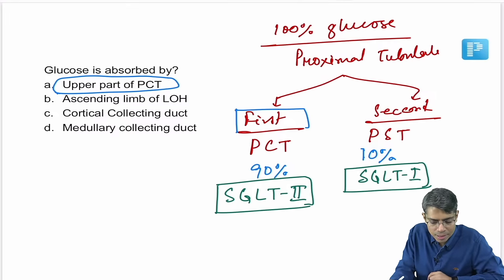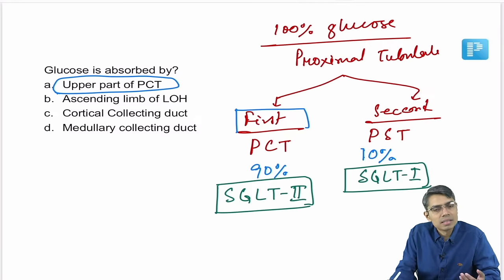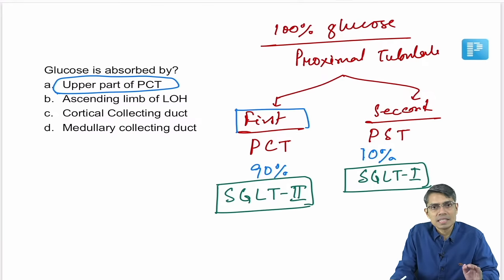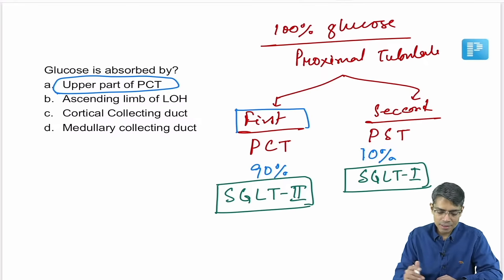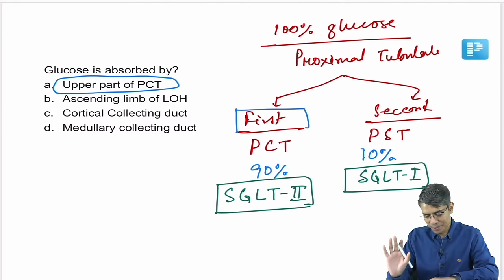SGLT2 is present mainly in the proximal part of the proximal tubule and handles maximum glucose reabsorption. SGLT1 is in the proximal straight tubule with less reabsorption. At minimum, remember SGLT and proximal tubule, with the first part of the proximal tubule being most important.